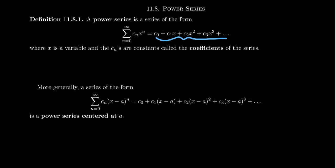In a more expanded form, this would look like c0 plus c1x plus c2x squared plus c3x cubed plus c4x to the fourth plus c5x to the fifth, and so on.